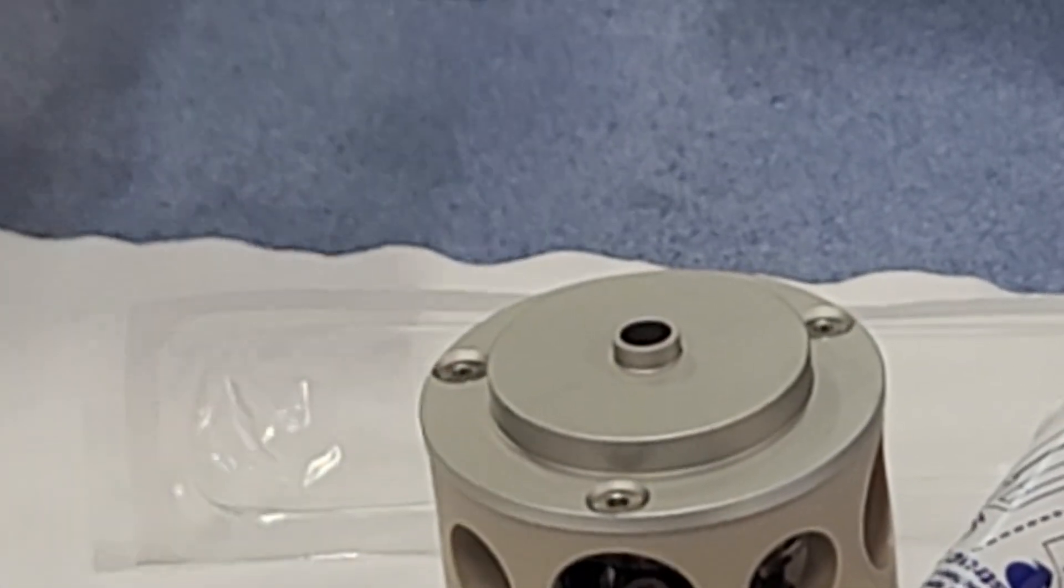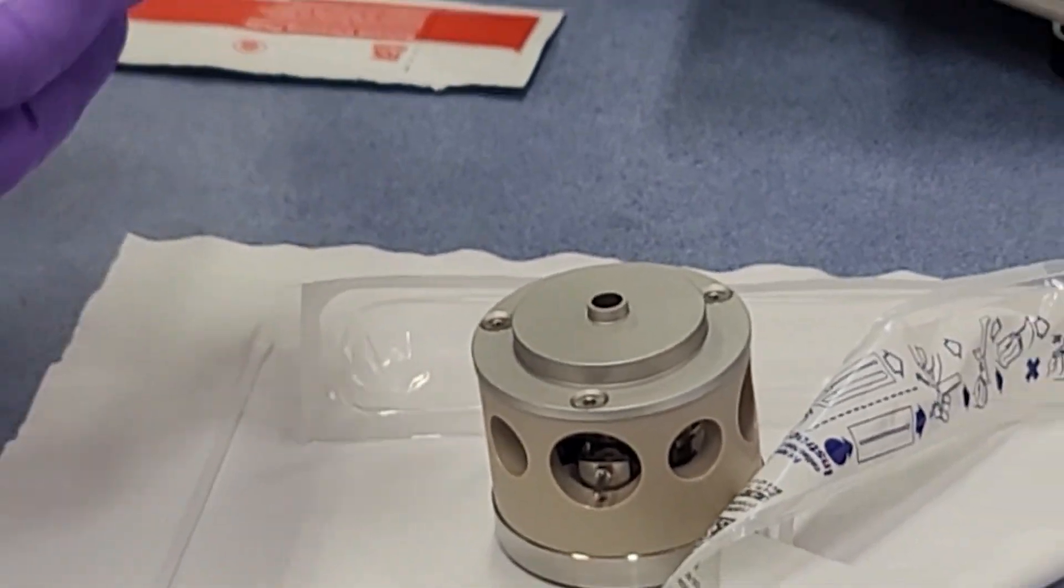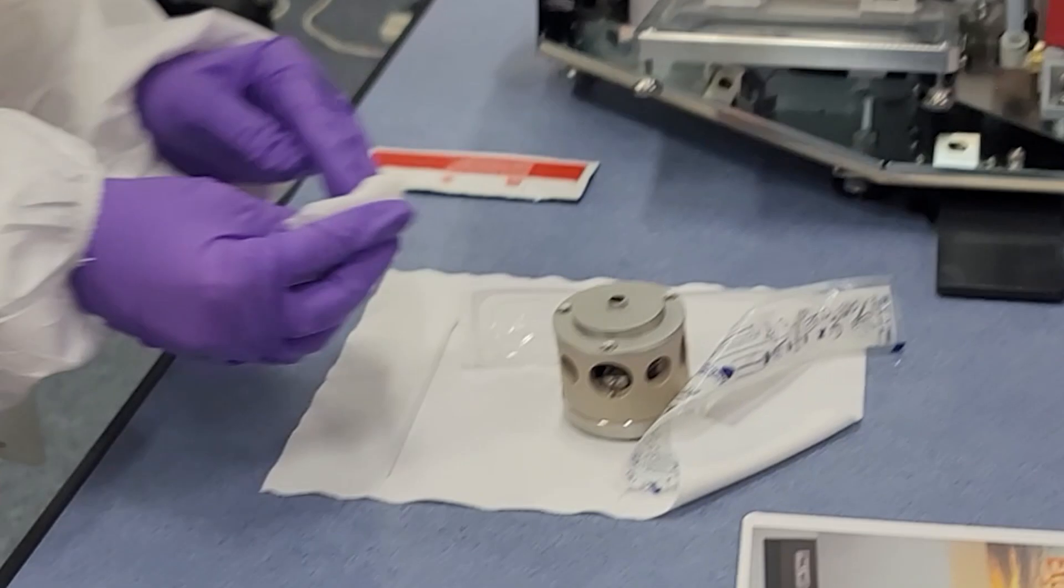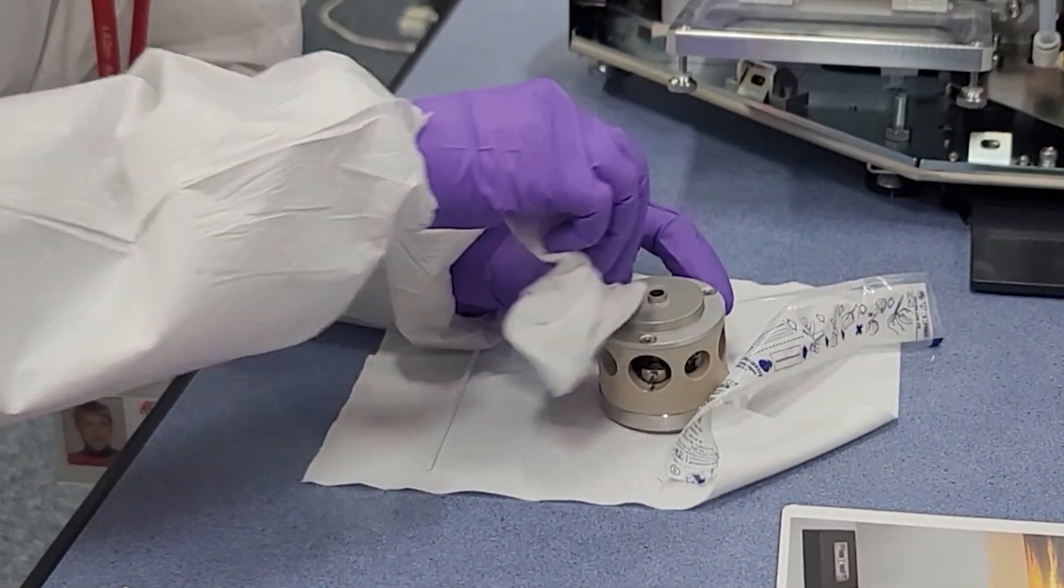Remove the cotton bud and use the same side of the IPA wipe to carefully wipe the extraction electrode to remove the bulk of any matrix or sample contamination.